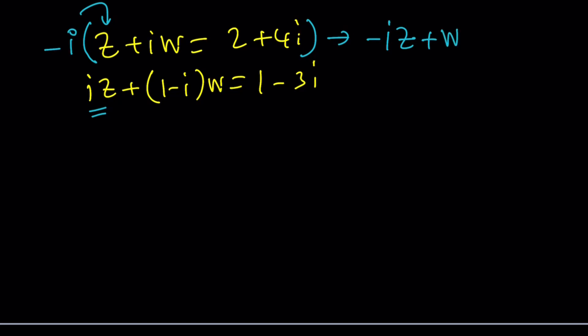And then on the right hand side we're going to multiply 2 by negative I. That's going to give us negative 2I. When we multiply 4I, we're going to get negative 4I squared and that's going to be positive 4 again. So just remember, I squared is negative 1. Therefore, negative I squared is positive 1.